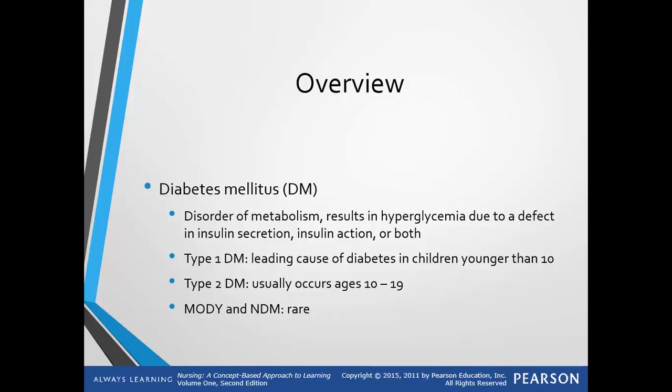Type 1 diabetes is the leading cause of diabetes in children younger than 10. Type 2 diabetes usually occurs ages 10 to 19. There is also MOTY, maturity onset of diabetes in youth, and NDM, neonatal diabetes mellitus. Both of those are rare — only 1% to 5% of all cases of diabetes in young individuals are diagnosed with either one of these types.